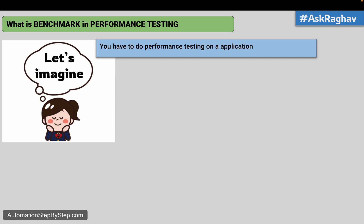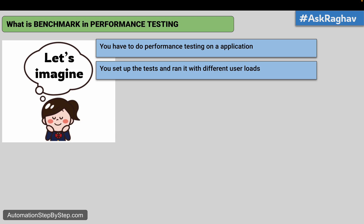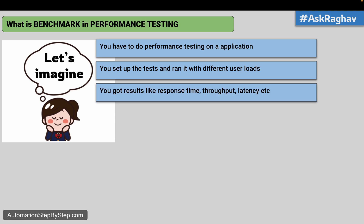Let's imagine you have to do performance testing of an application — it can be a webpage, API, or any software. For this you will use some performance testing tool like JMeter, Gatling, LoadRunner, NeoLoad, etc., and you will create the tests and then run them with different user loads like 50 users, 100 users, 1000, 50,000, 100,000 and so on.